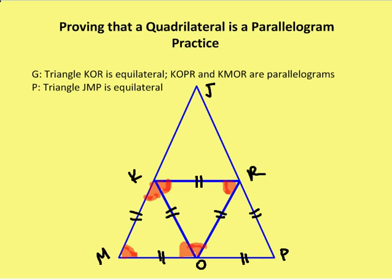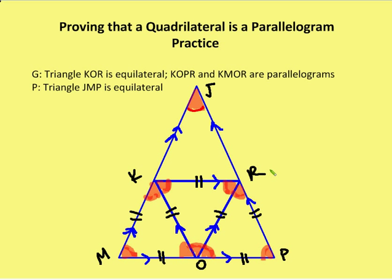I also know that KR is parallel to OP and also parallel to MO. KO is parallel to RP, which also makes it parallel to JR. And KM is parallel to OR, which also makes it parallel to JK. So if I think of JP as a parallel line to KO, I can say that angle MKO is congruent to angle KJR because they're corresponding angles. I mark up KJR, and now I can see that triangle JMP is equiangular — and because it's equiangular, it's also equilateral. So JMP is equilateral.